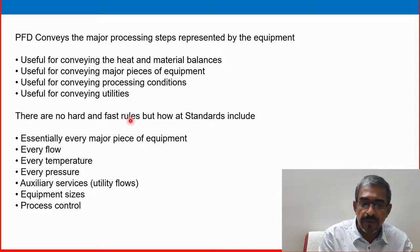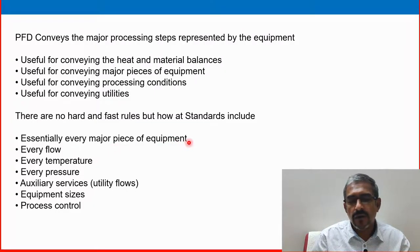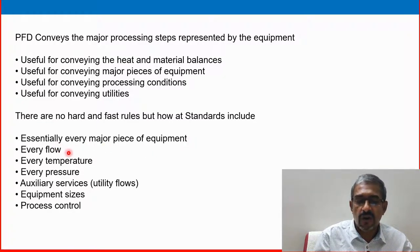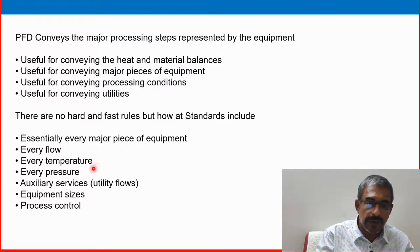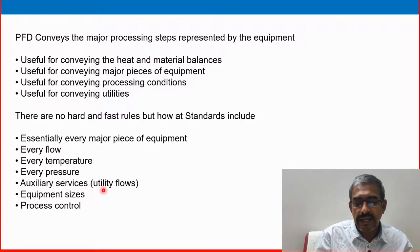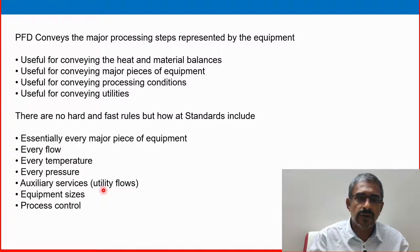There are no hard and fast rule. This is very important, there are no hard and fast rule. But at standard include at least they have to include essentially every major piece of equipment. Every flow that is starting from one location to another moving from left to right. Temperature what is the possible, pressure that is possible. Auxiliary services like utility, instrumentation air, steam, water supply, cooling water line, process water line, then instrument nitrogen line, inert gas line, etc.